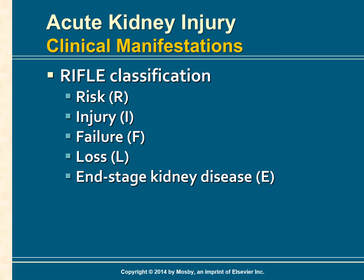Injury, represented by I, is the second stage where the GFR is decreased by 50 percent. Failure, represented by F, is the third stage where the GFR is decreased by 75 percent. The two outcome variables are Loss, represented by L, and End-stage kidney disease, represented by E. In the last two stages there is complete failure of the kidneys.